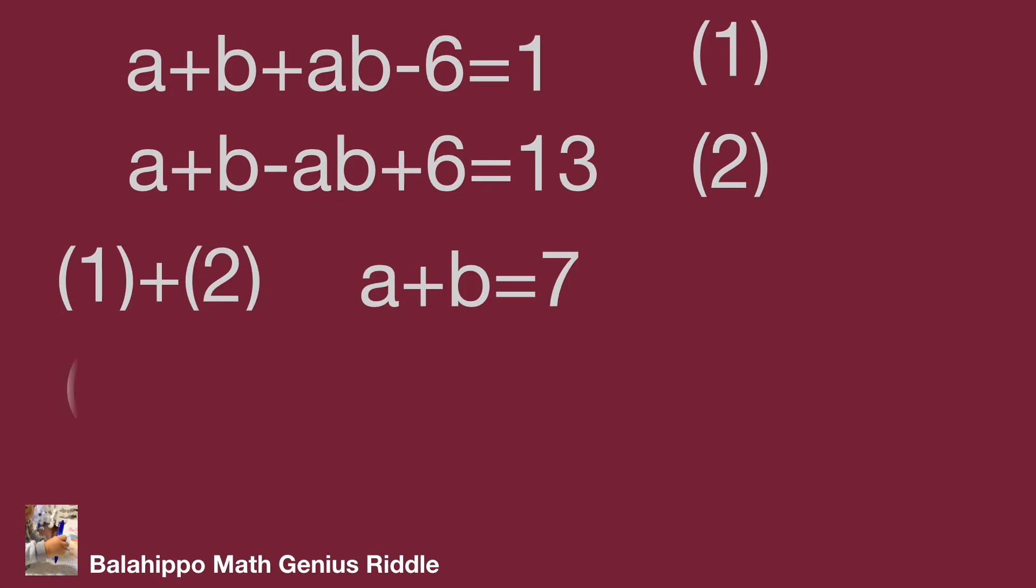Then from equation 1 minus equation 2, we get 2ab = -12, so ab = 0. We get the first number group: a = 0 and b = 7.